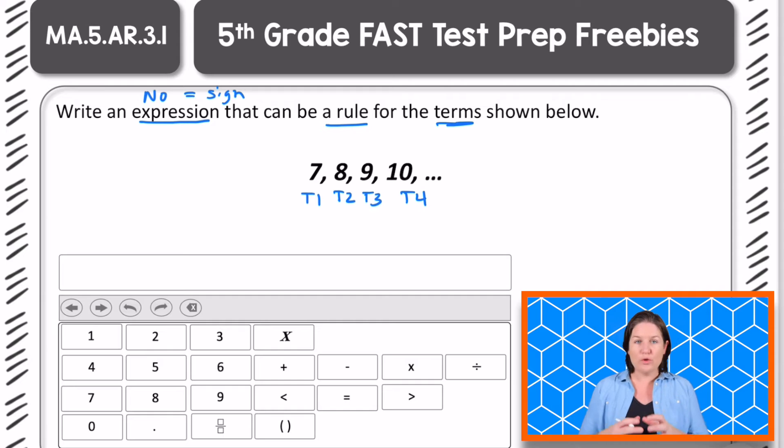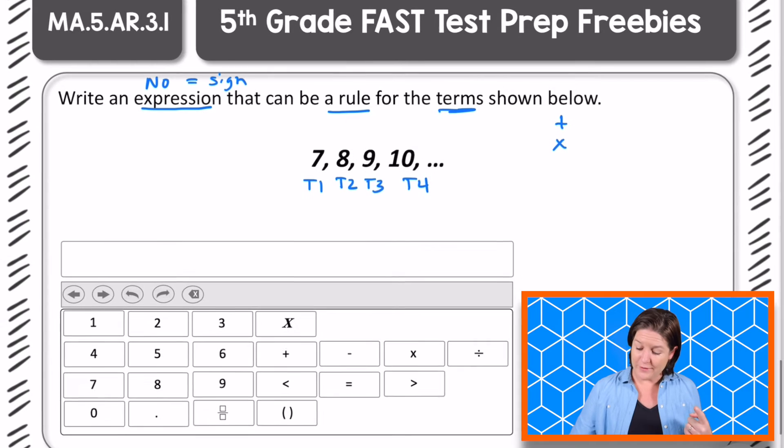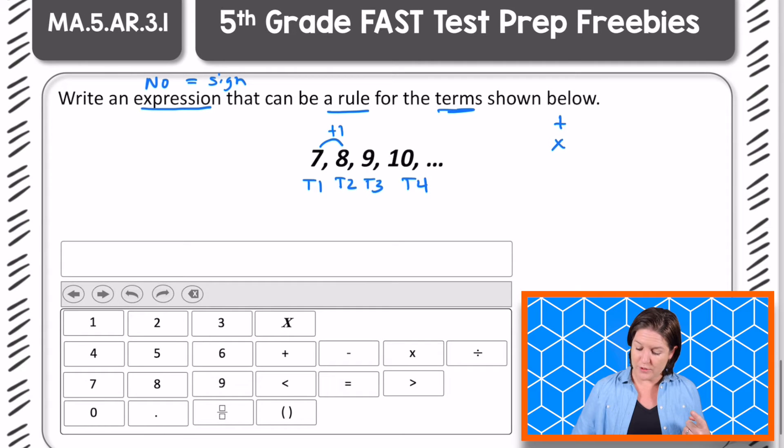Okay, so we have to create an expression that helps us to get there. Well the rule, let's look at it. We're going from 7, to 8, to 9, to 10. We're increasing, right? We're increasing, which means that we are either adding or multiplying here. Which one do you think we're doing? Yeah, we're adding by how much? By one, right? The rule for each one is plus one, plus one, plus one.